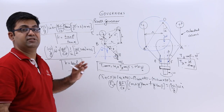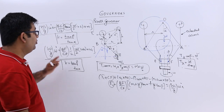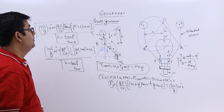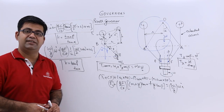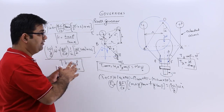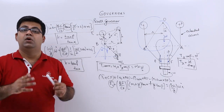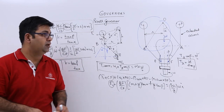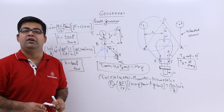It is everything the same as the Porter governor. I hope you understood the Proell governor as well. Now let's have a look at some examples on the three governors that we have done up till now — that is, the Watt governor, Porter governor, and the Proell governor.